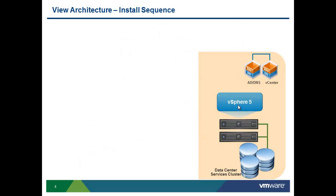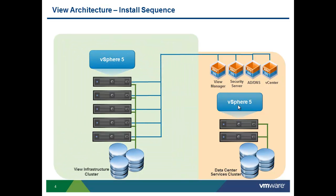Now, let us talk about the installation sequence so you can understand what View components get installed in what order. VMware View utilizes VMware vSphere platform. First of all, you would want to set up Active Directory, DNS, and vSphere servers. Once you have those components installed, you can go ahead and start installing VMware View Connection Server. Some customers who want to secure their environment choose to install Secure Server, which acts as a gateway server and can be used to create a DMZ Zone for your virtual desktops.